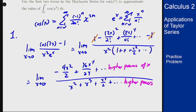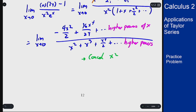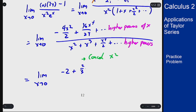I can then cancel an x² from every term, giving me the limit as x → 0 of (-2 + (2/3)x² + higher powers of x) divided by (1 + x + x²/2 + higher powers of x).